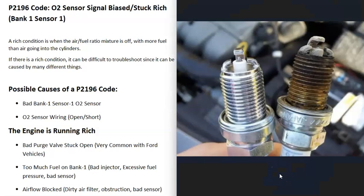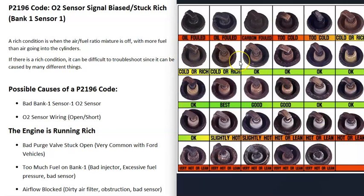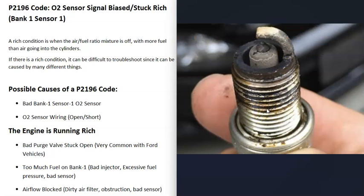One diagnostic method is to remove the spark plugs on bank one and check how they're burning by matching them to a spark plug burn chart. If a spark plug is really white it means the cylinder is running lean, but if it's really dark it means it's running rich. This can tell you if one or more cylinders on bank one is running rich.